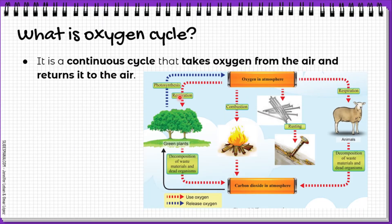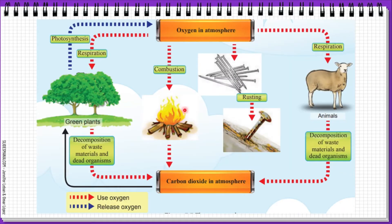Now we look at the oxygen cycle. So what is the oxygen cycle? It is a continuous cycle that takes oxygen from the air and returns it to the air. In the oxygen cycle diagram, the red arrow indicates the use of oxygen — guna oxygen, proses yang menggunakan oxygen — whereas the blue arrow indicates the release of oxygen — mengembalikan oksigen ke udara.